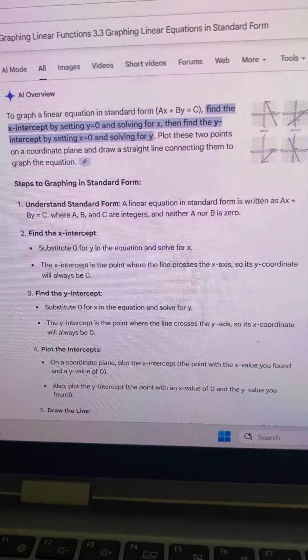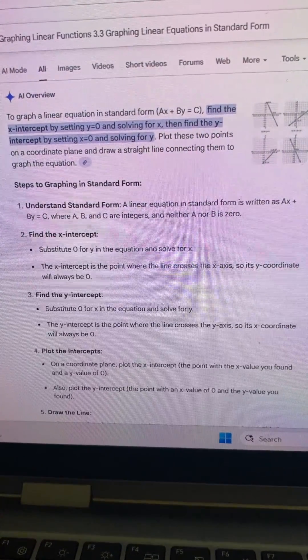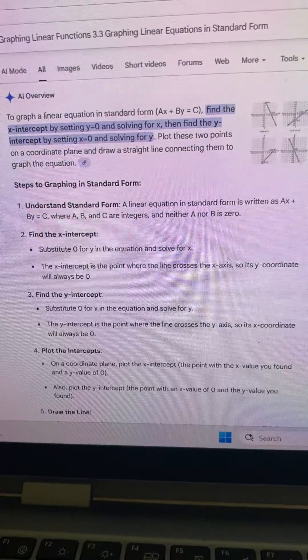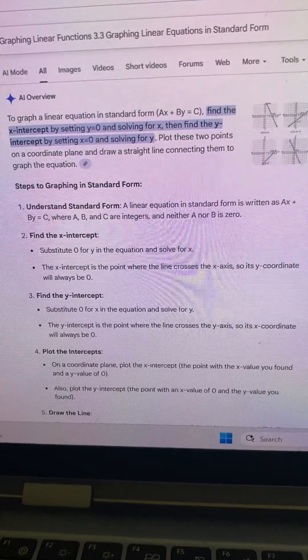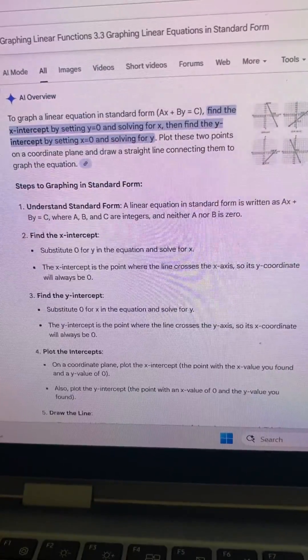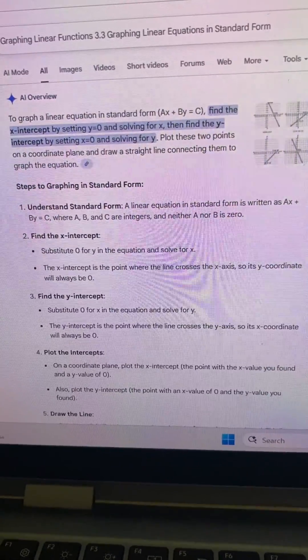Find the y-intercept. Substitute 0 for x in the equation and solve for y. The y-intercept is the point where the line crosses the y-axis, so its x-coordinate will always be 0.